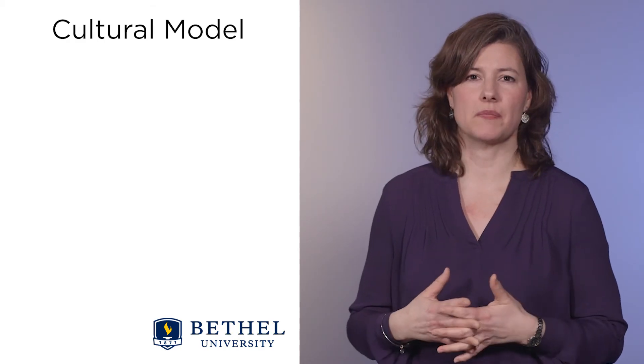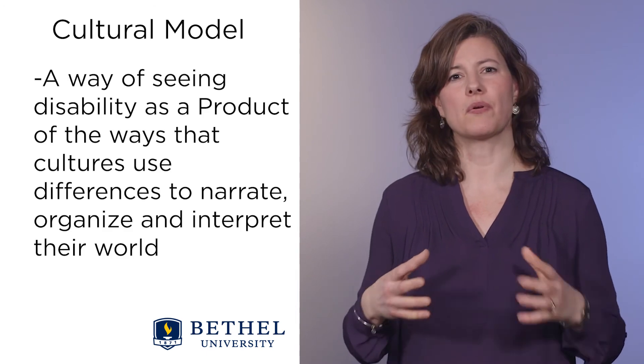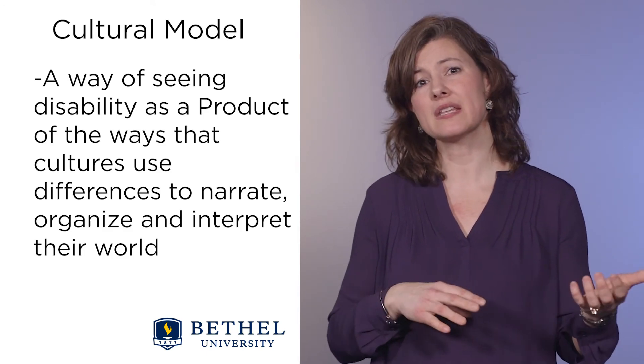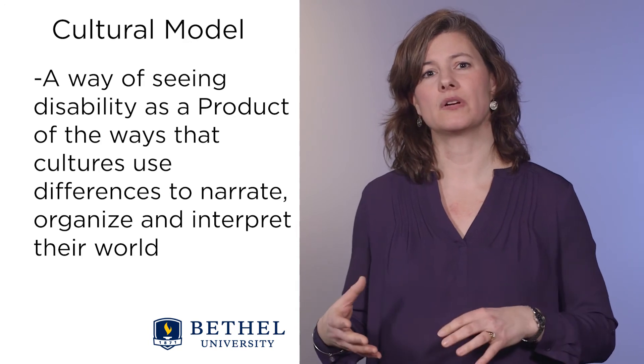The next model, the cultural model, is a way of seeing disability as a product of the ways that cultures use differences to narrate, organize, and interpret their world. How we see disability is a reflection of the many larger cultural belief systems, and it is dynamic and fluid. This cultural model arose in direct reaction to the extreme focus on the social environment, as critics felt the social model didn't really account for cultural influences on disability and how it is perceived from cultural belief systems.